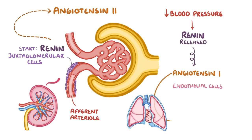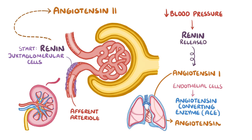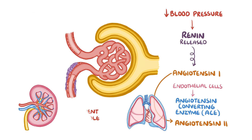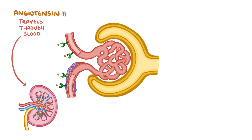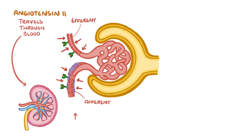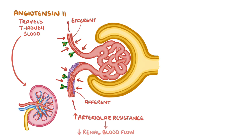Endothelial cells — mostly those lining vessels in the lungs — make an enzyme called angiotensin-converting enzyme, or ACE, which converts angiotensin 1 to angiotensin 2. Angiotensin 2 then travels through the blood and, when it reaches the kidneys, binds to angiotensin receptors along the afferent and efferent arterioles. Just like adrenaline, it causes those arterioles to constrict, and the increased arterial resistance leads to low renal blood flow.